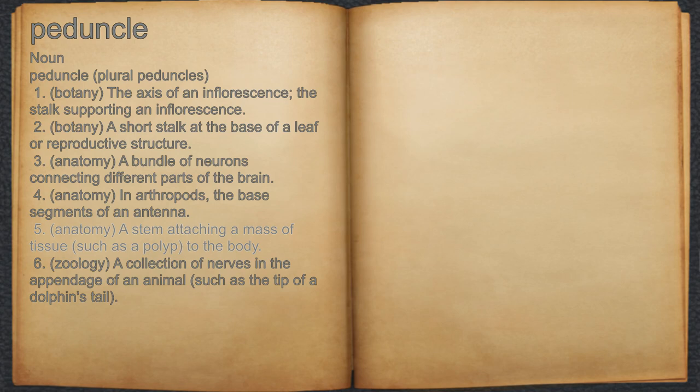6. Zoology: a collection of nerves in the appendage of an animal, such as the tip of a dolphin's tail.